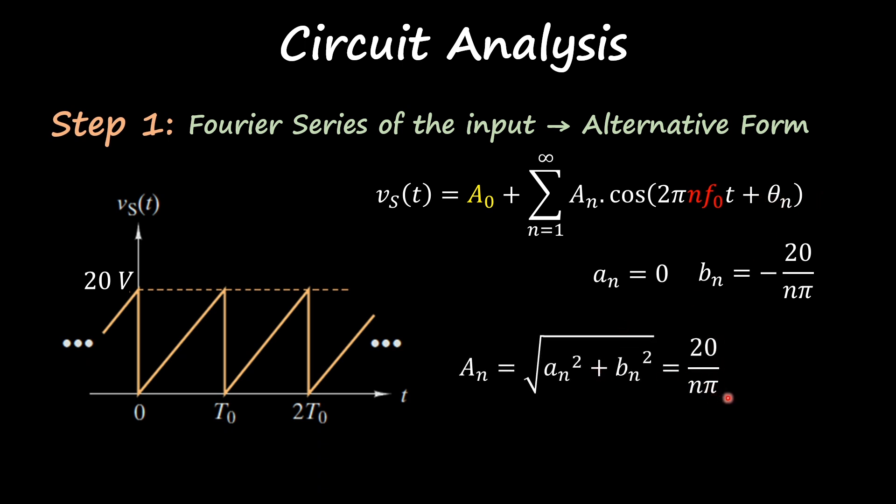Now let's go and plug these into that amplitude and phase representation. So amplitude you get 20 over n*pi. In phase you get 90 degrees. So how do I get to 90 degrees? I have my b_n, which is a negative number, divided by zero. I'm going to plot this arctangent inverse here on the top.